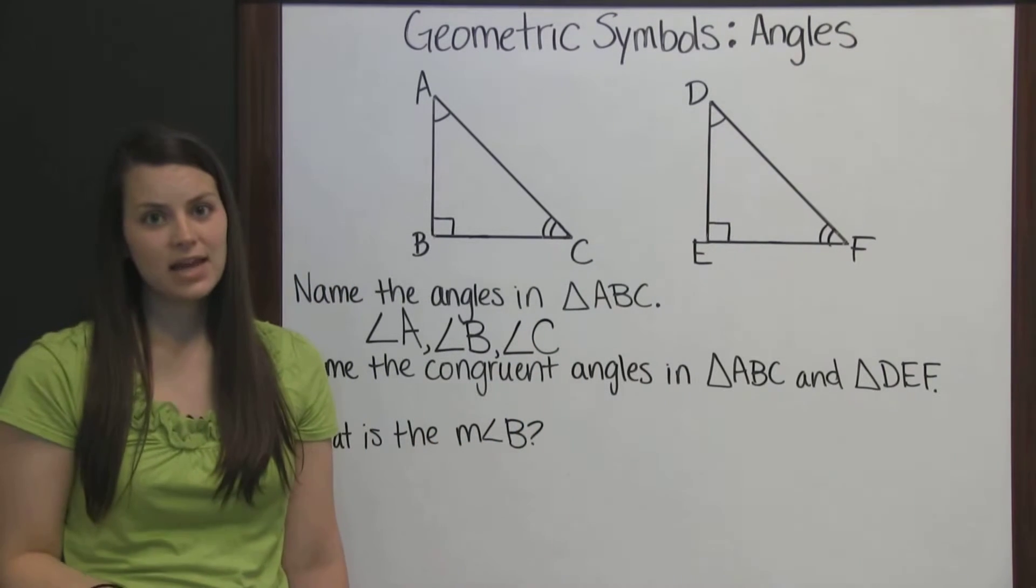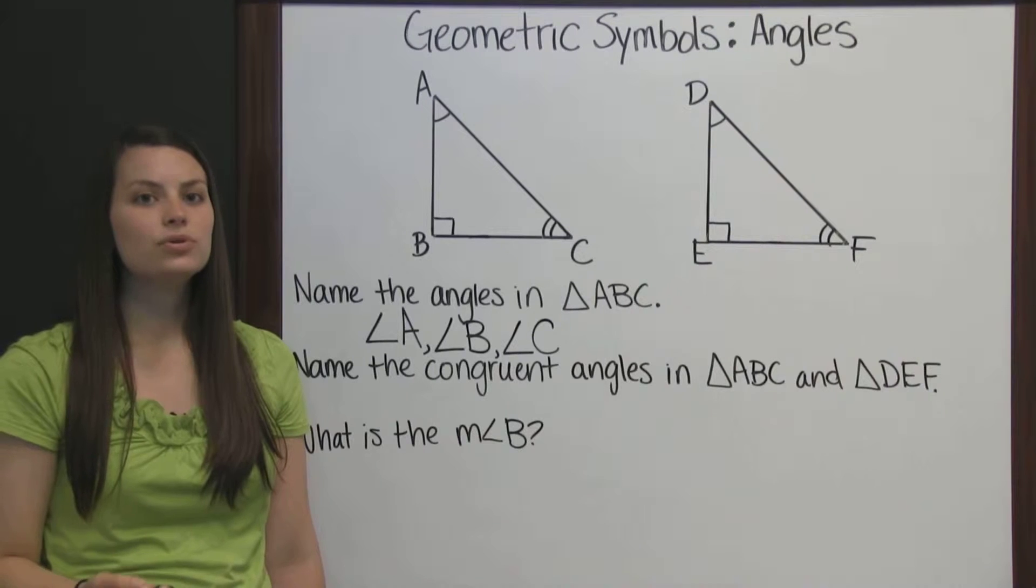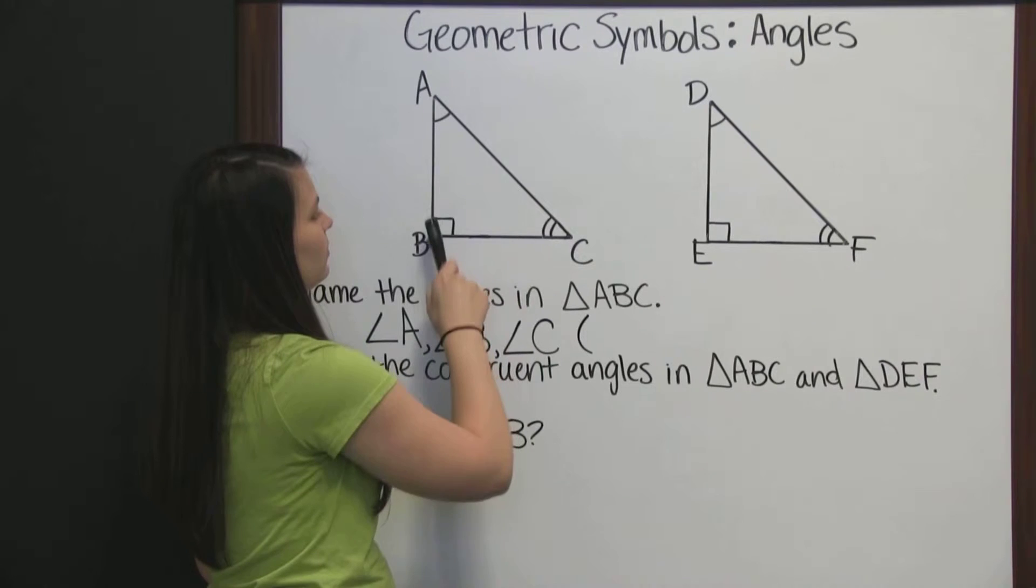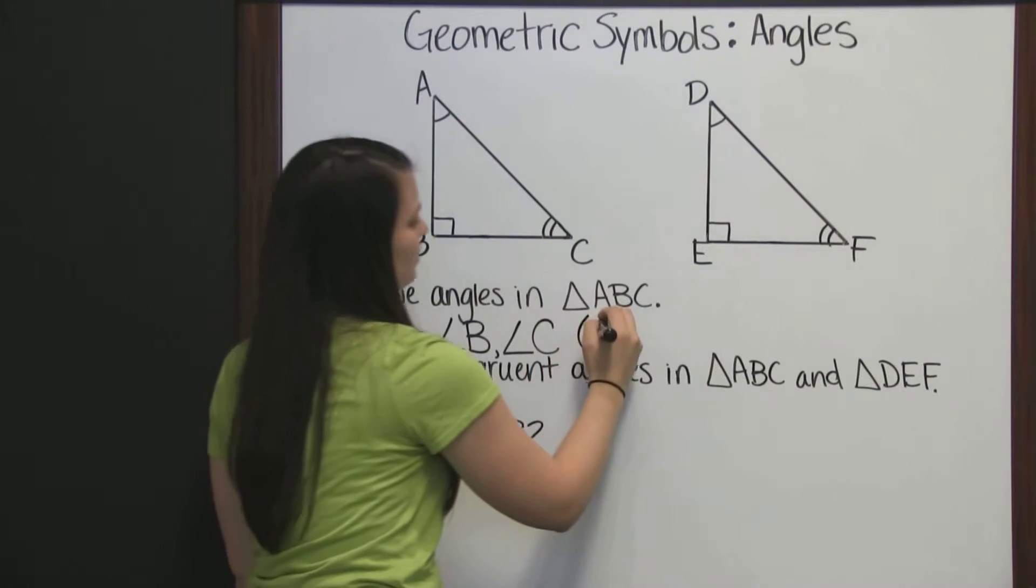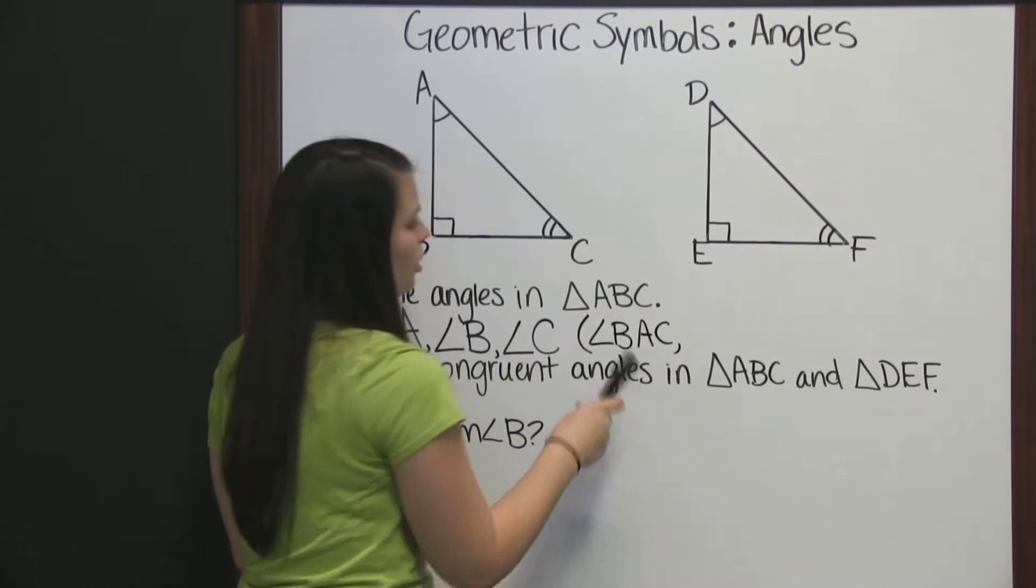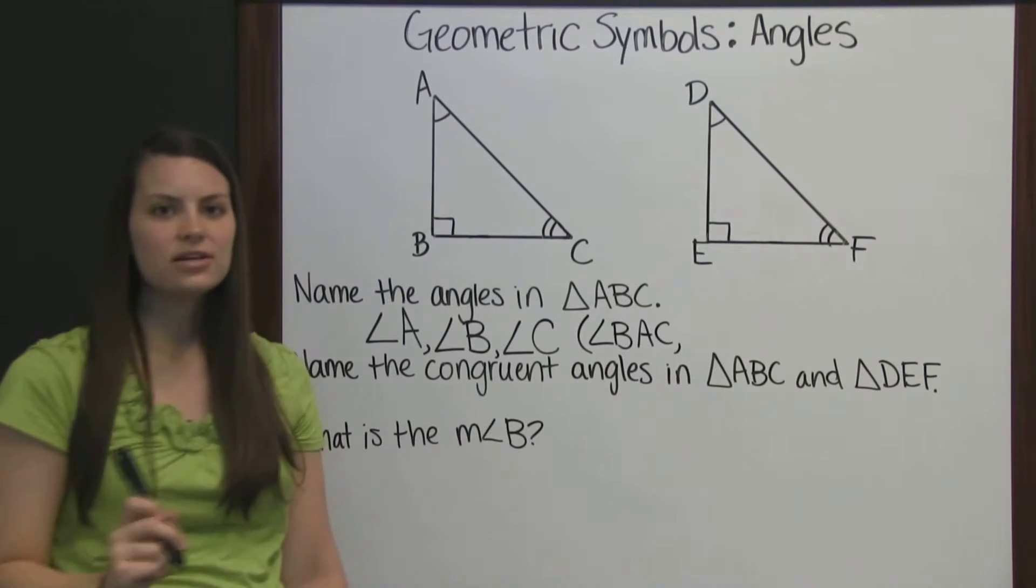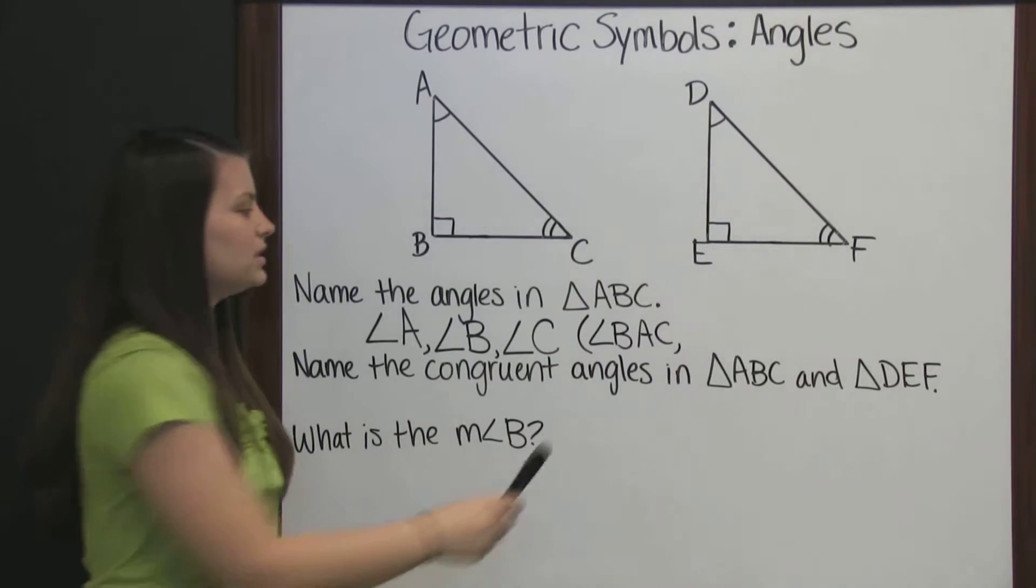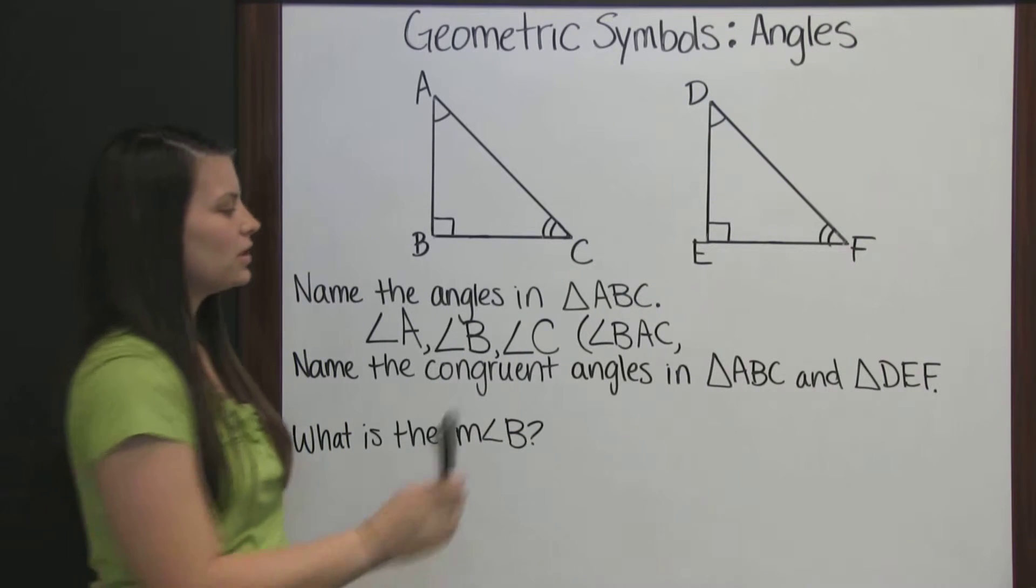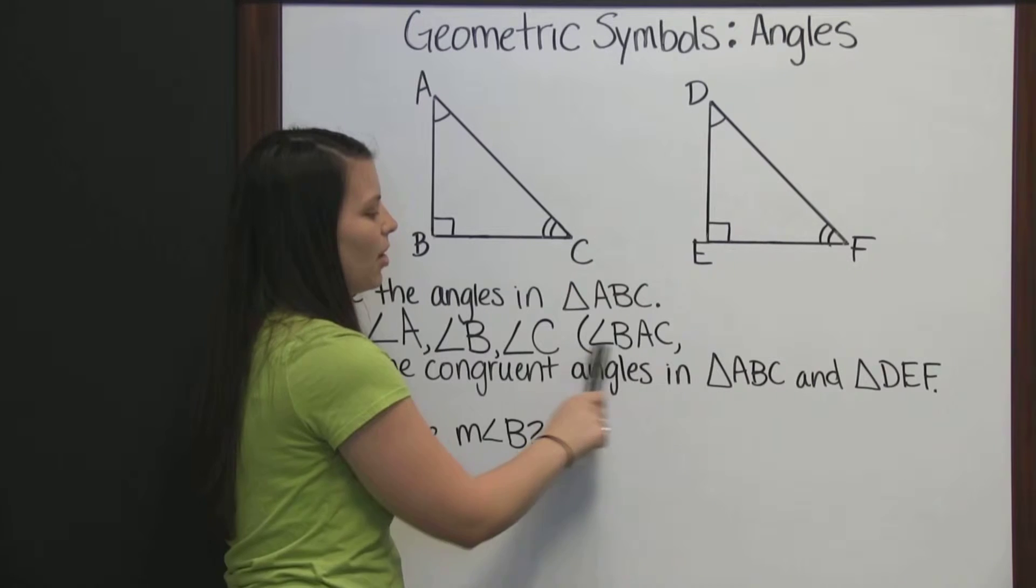The other way to name angles is to use three letters. So angle A could be called angle BAC. Notice that the vertex is in the center of the name and we still use that angle symbol. It looks very similar to the less than sign, but the bottom is straight.